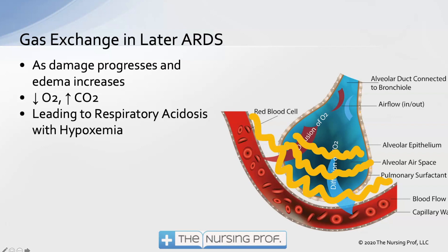In the later stages of ARDS, we're having damage not only to that alveolar capillary membrane, but fluid is also filling the alveolus and damage is occurring to the alveolus itself. Then we will see a decrease in oxygen and a buildup of CO2 as both gases are no longer able to move across that alveolar capillary membrane — resulting in respiratory acidosis with hypoxemia because the CO2 is building up, causing the acidosis, while hypoxemia continues.